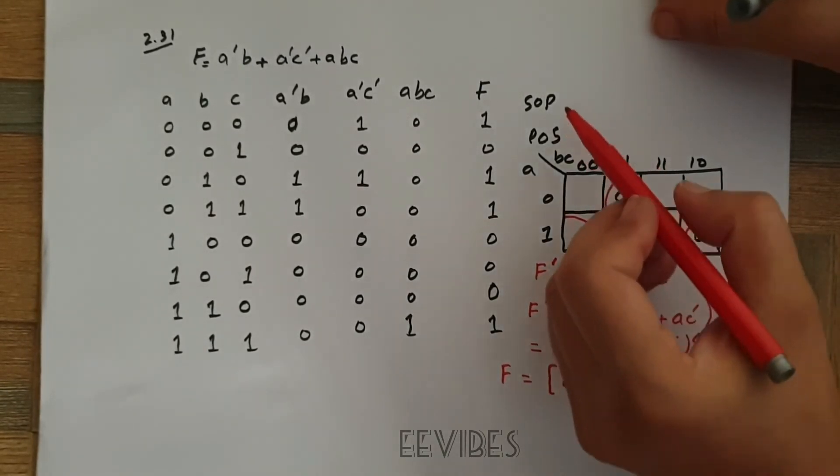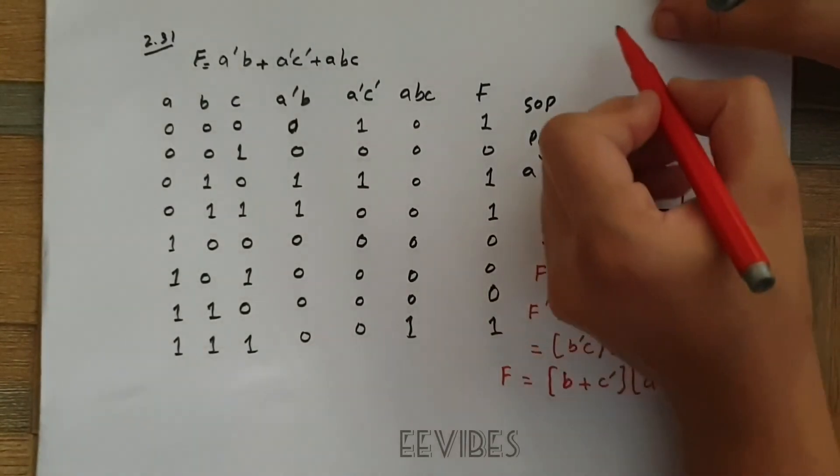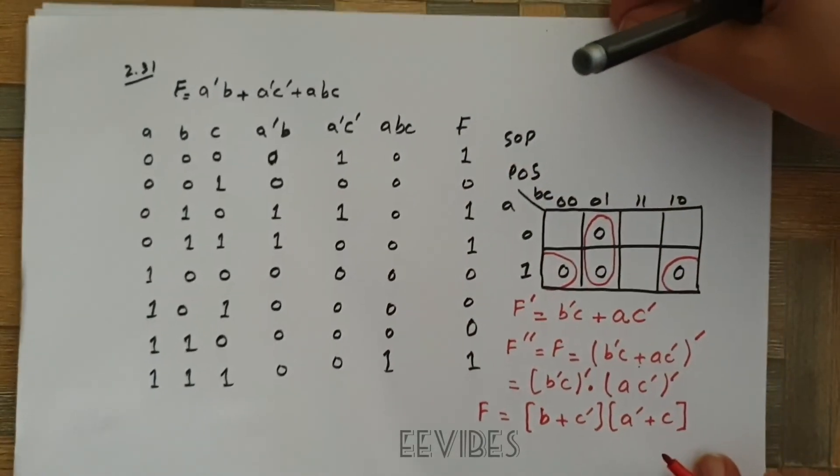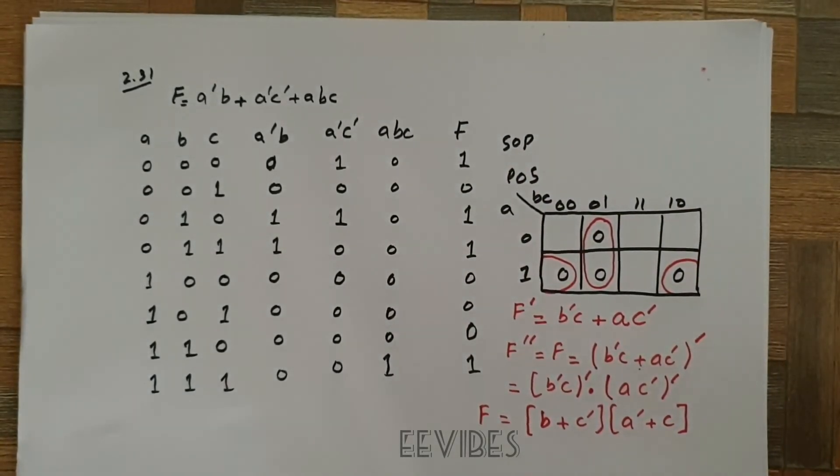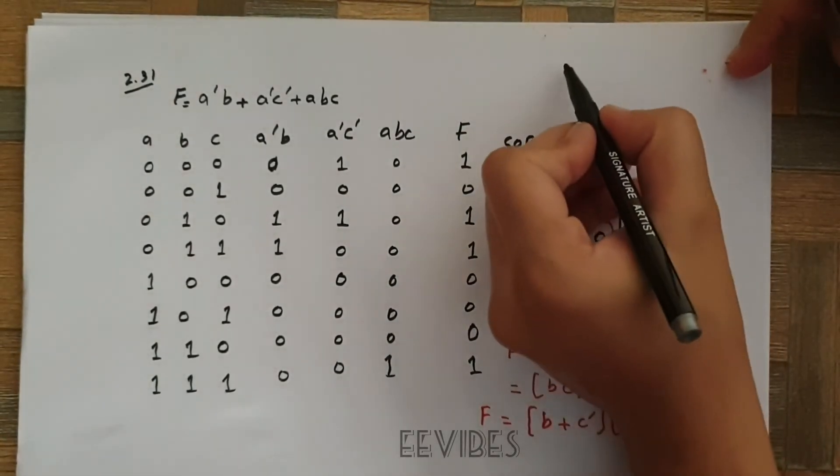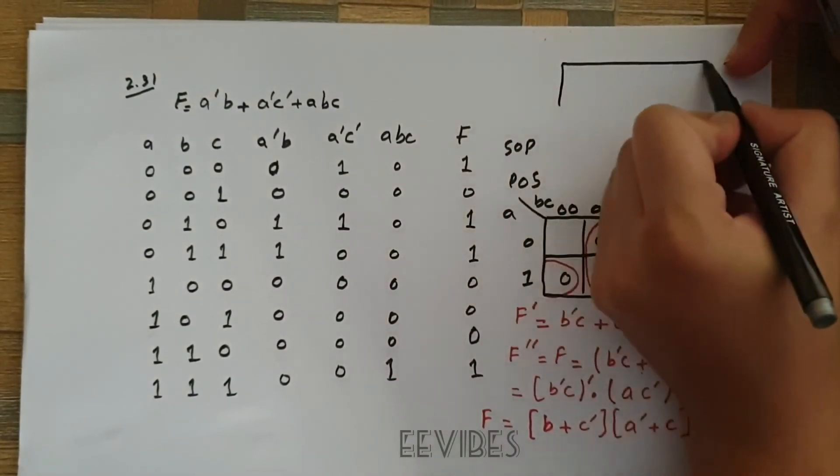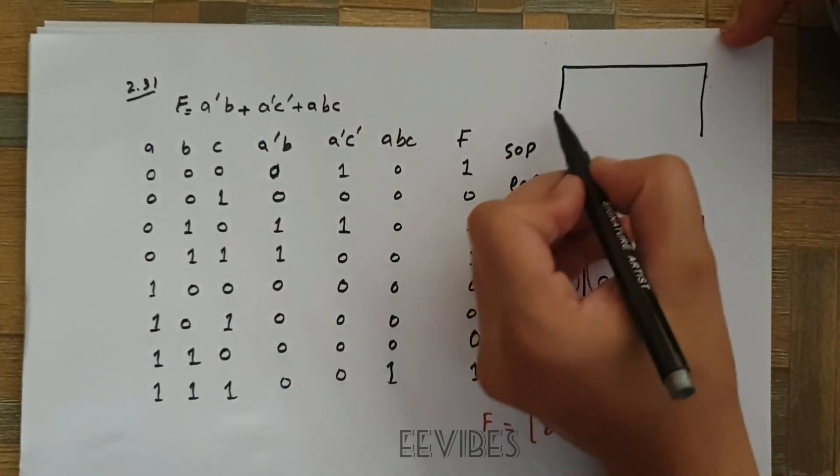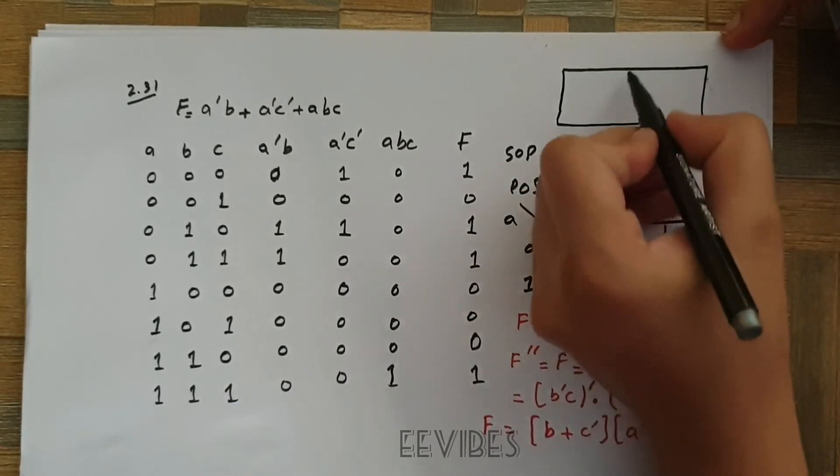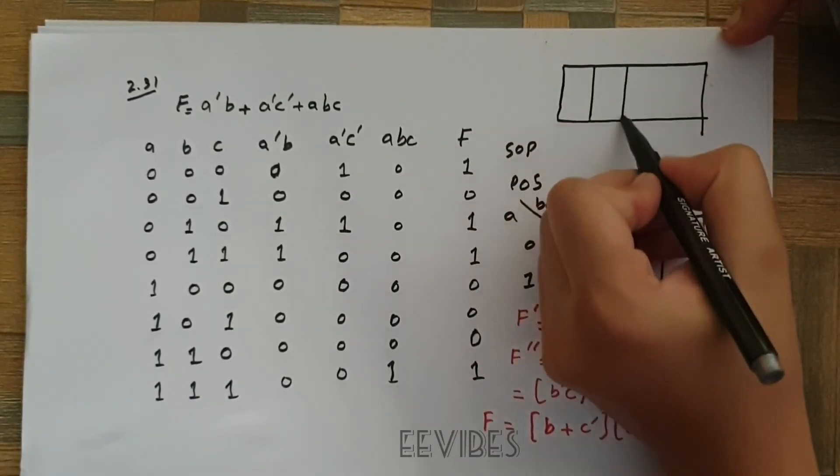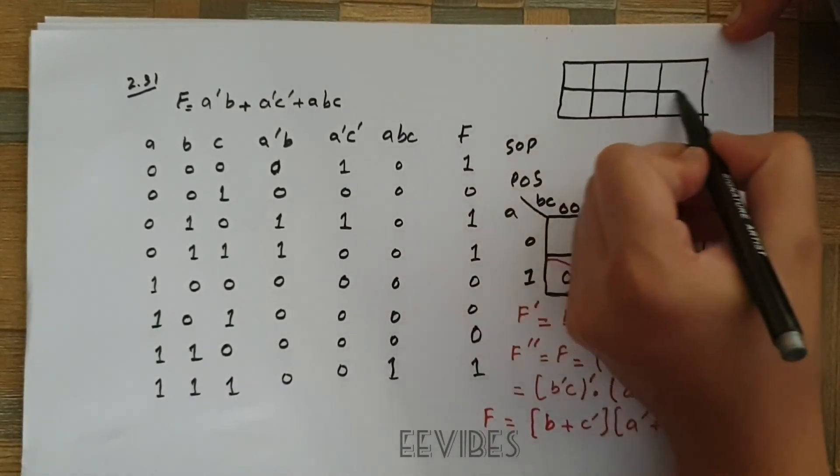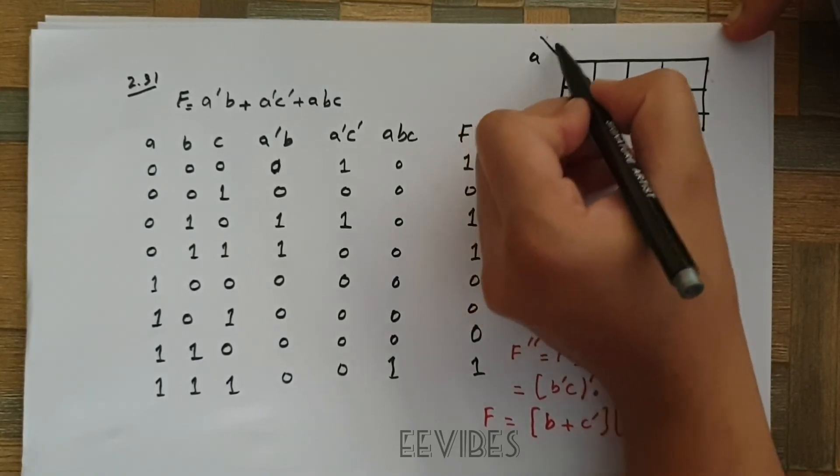Similarly if you want to represent this function as the sum of the products, then what you need to do, you will again design the K-map for it. And since three variables are involved, you can write abc.